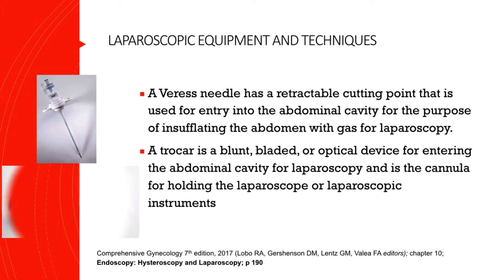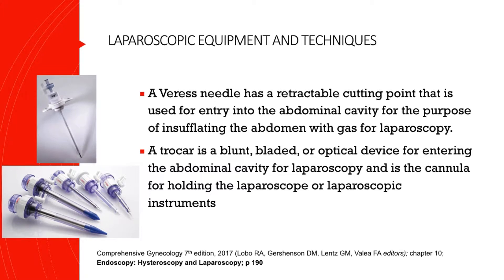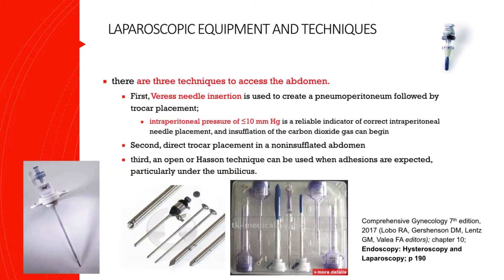We also use a trocar, which could be blunt, bladed, or an optical device, for entering the abdominal cavity, and this serves as the cannula for holding the laparoscope or laparoscopic instruments. Generally there are three techniques to access the abdomen: first, Veress needle insertion to create a pneumoperitoneum followed by trocar placement; second, direct trocar placement; and third, an open or Hasson technique used when adhesions are expected, particularly under the umbilicus.